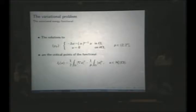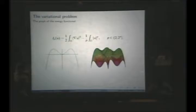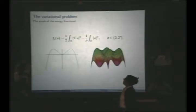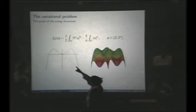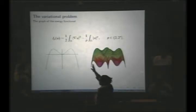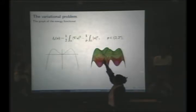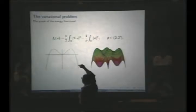Let us look more closely at the functional J_p. It has a quadratic term — the first summand is quadratic with a positive coefficient — and the second summand is something to the power p with a negative coefficient. Since p is larger than 2, near the origin the quadratic term wins and goes up, while far away the p-power term wins and the function goes to minus infinity.